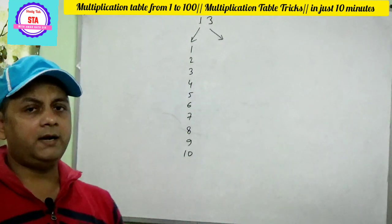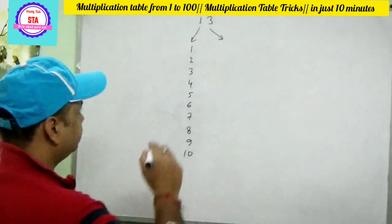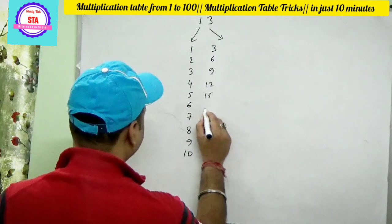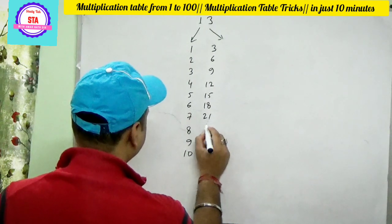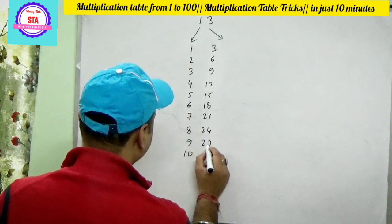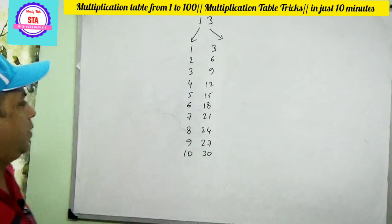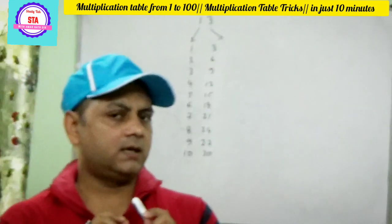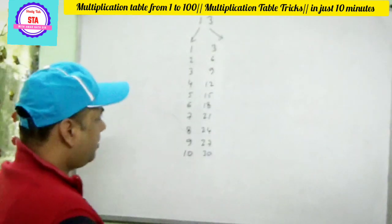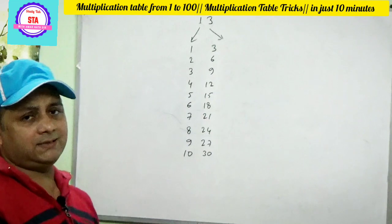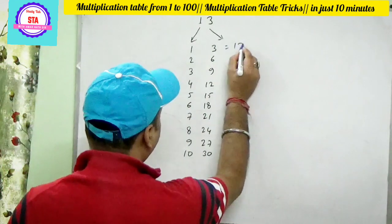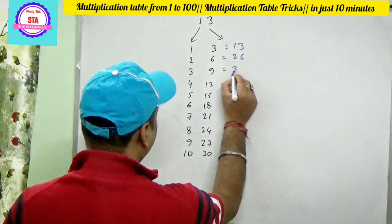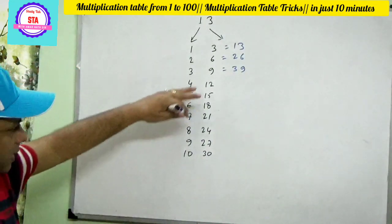This is the table of 1. Write down the table of 3. This is the table of 3. So you have to write down the table of 2 — write down 13 times 1 to 13, which gives: 13, 26, 39...